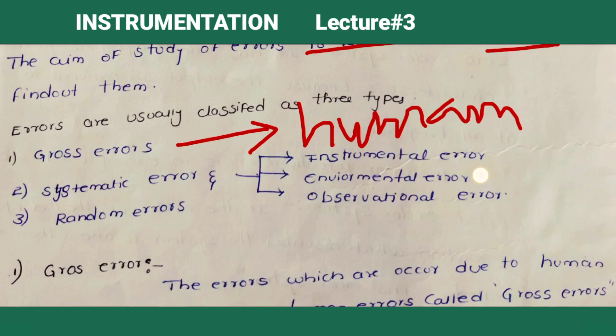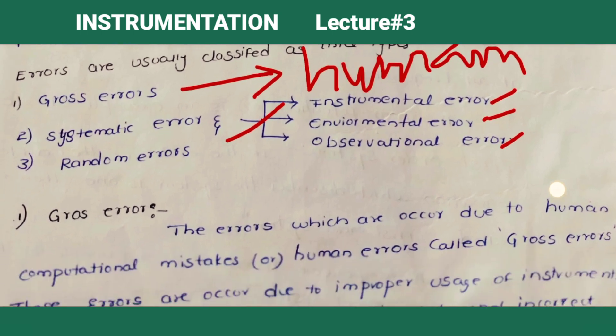The second type is systematic error. These are system-present errors. Systematic errors are classified into three types: instrumental error, environmental error, and observational error.